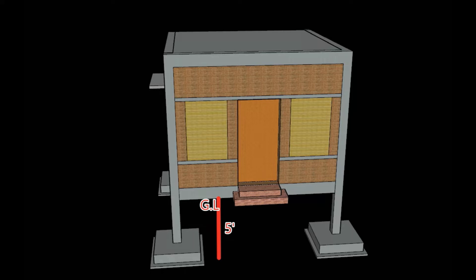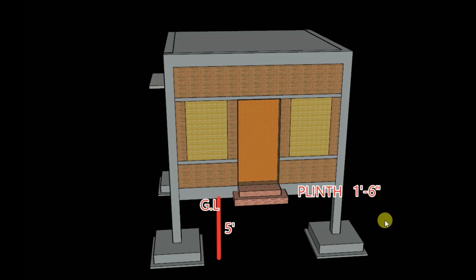It is always best practice to raise the building height to some distance from the ground level or road level. Because if the building is at the same level as the existing ground level or road level, when rain comes the water will come inside your building. To avoid such problems, you raise the building from the existing ground level. The plinth level is the level where the ground floor starts. It is recommended to go with a height of one foot six inches from the existing ground level.